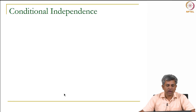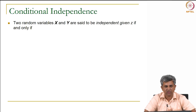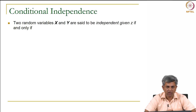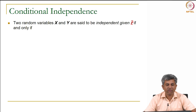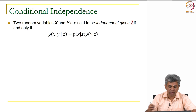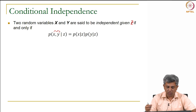Now we look at conditional independence. The definition is a simple extension of the previous: two random variables X and Y are said to be conditionally independent given a third variable Z if and only if P(X,Y|Z) = P(X|Z) × P(Y|Z).